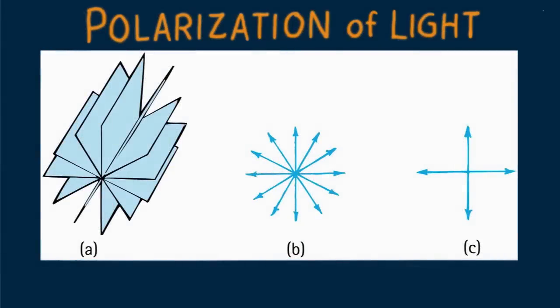The planes of vibration might be as numerous as the accelerating electrons producing them. A few planes of vibration are represented in A. All these planes can be represented as radial lines in B, or more simply in C, by vectors in two mutually perpendicular directions.